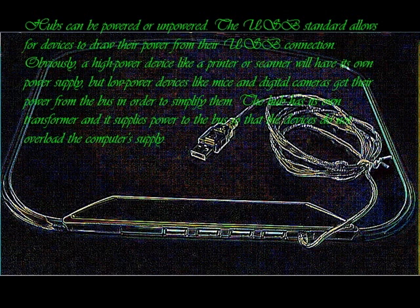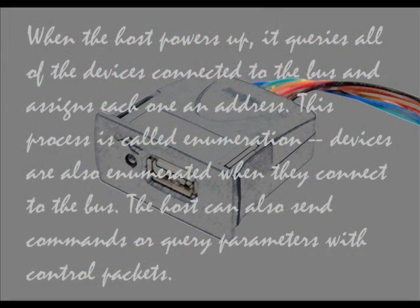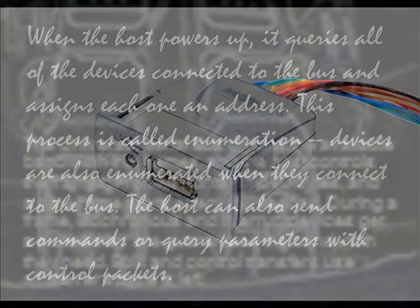This is an example of another USB hub. When the host powers up, it queries all of the devices connected to the bus and assigns each one an address. This process is called enumeration. Devices are also enumerated when they connect to the bus. The host can also send commands or query parameters with control packets. USB divides the available bandwidth into frames and the host controls the frames. Frames contain approximately 1,500 bytes and a new frame starts every millisecond.